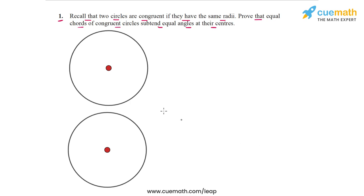So here are two congruent circles. Basically, they have the same radius. Now we have to take equal chords in these two circles. So let's take a chord like this in circle one, and let's take an equal chord in circle two like this.